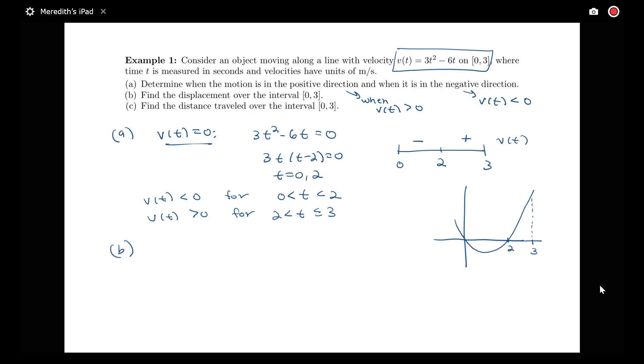We know that displacement and distance traveled over the interval have to do with integrating our region. Notice that I have this area below the t-axis here and this area above. So how are we going to compute displacement versus distance traveled?